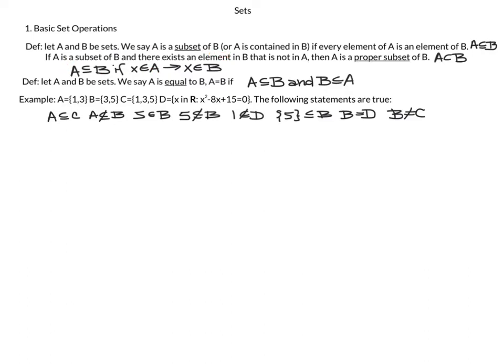One important thing about this portion of mathematics when doing proofs: definitions are everything. It's not enough to have a general sense of what a subset is. You actually have to know this definition, because when you want to show that A is a subset of B, the definition tells you what you need to show. You need to show: if X is in A, then X is necessarily also in B. This definition tells you exactly what you need to prove for A to be contained in B.